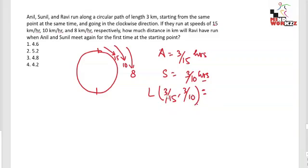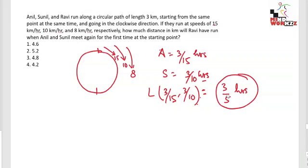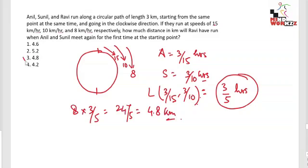The LCM of 3/15 and 3/10 is 3/5 hours, so Anil and Sunil meet after 3/5 hours at the starting point. The distance traveled by Ravi in 3/5 hours is 8 × (3/5) = 24/5 = 4.8 kilometers. So the answer is 4.8 km — a very easy question that you should solve instantly.